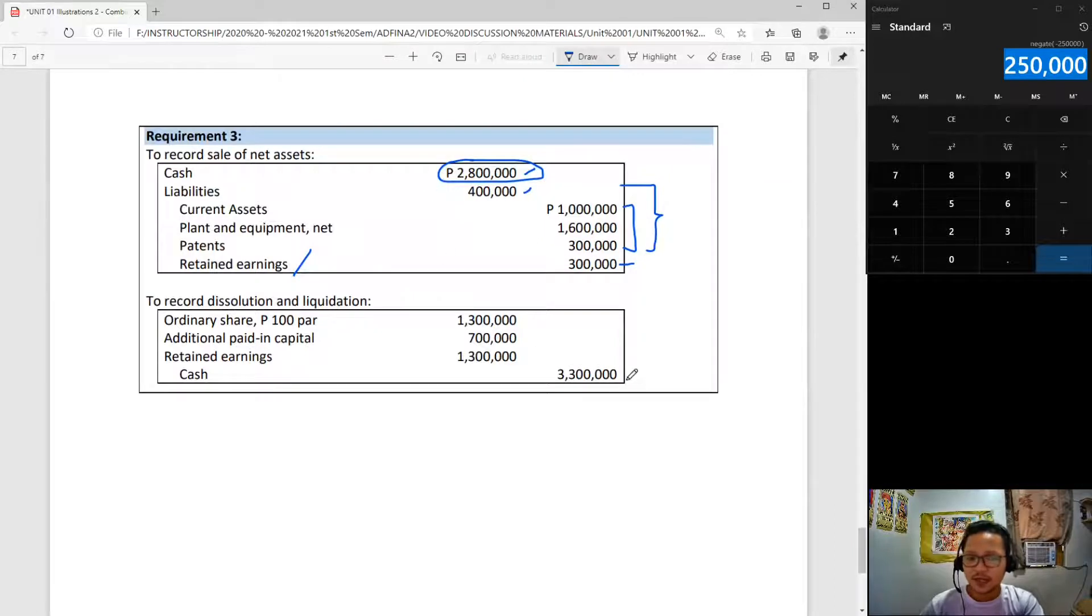Also, Granger was dissolved, right? So what Granger will do is credit all of its cash - the 2,800,000 plus the pre-existing cash totaling 3,300,000 - and then all the equity items will be debited.